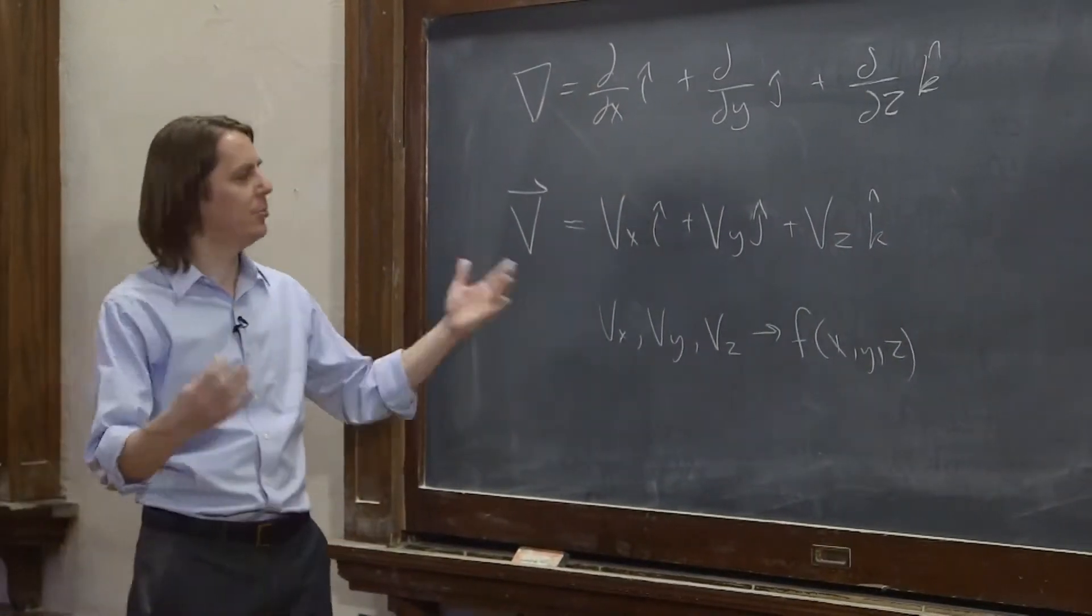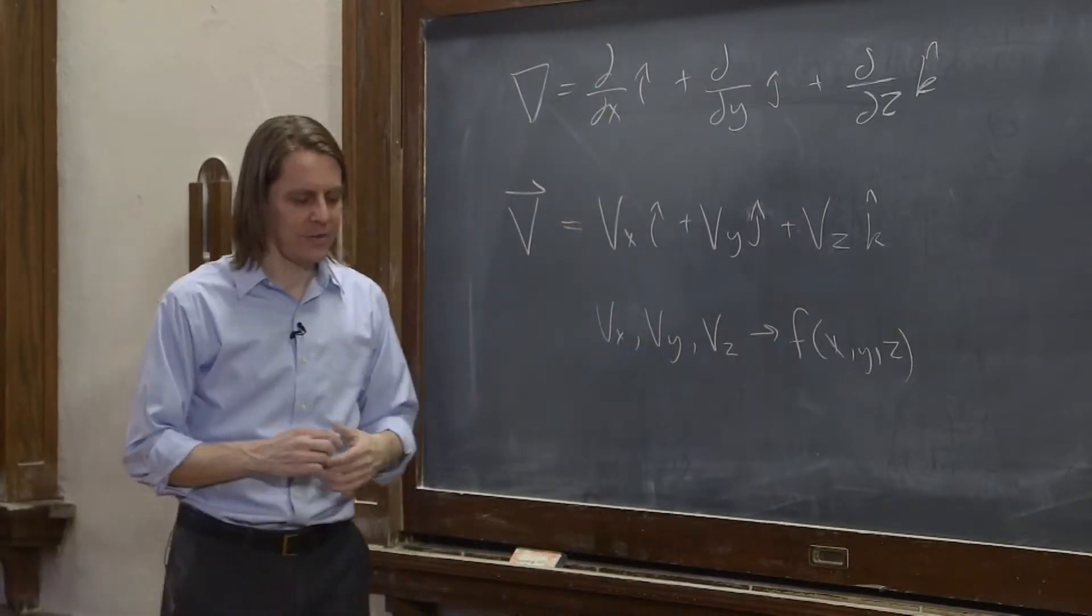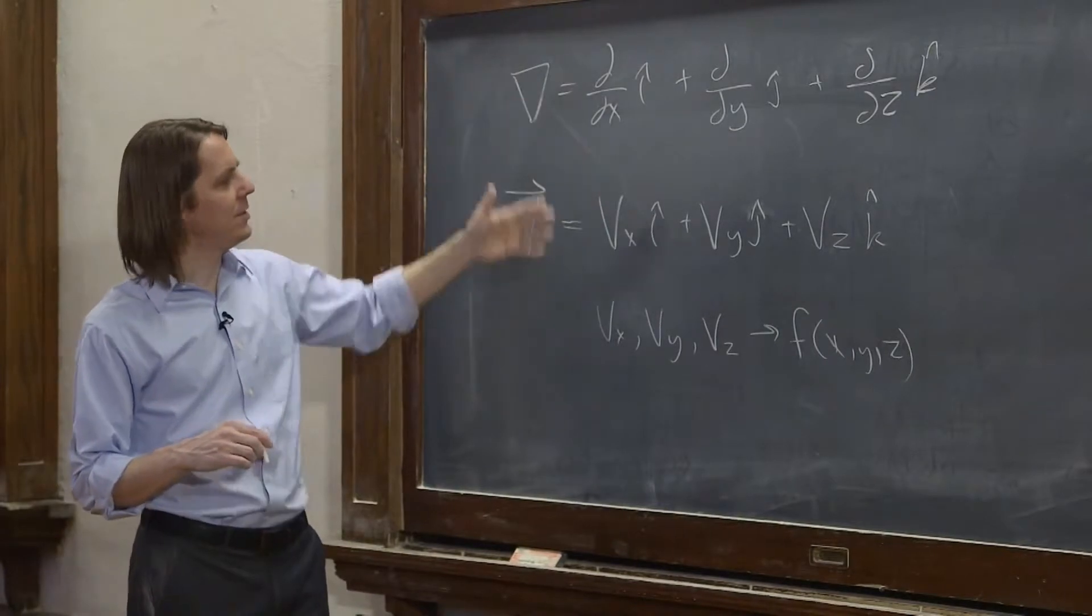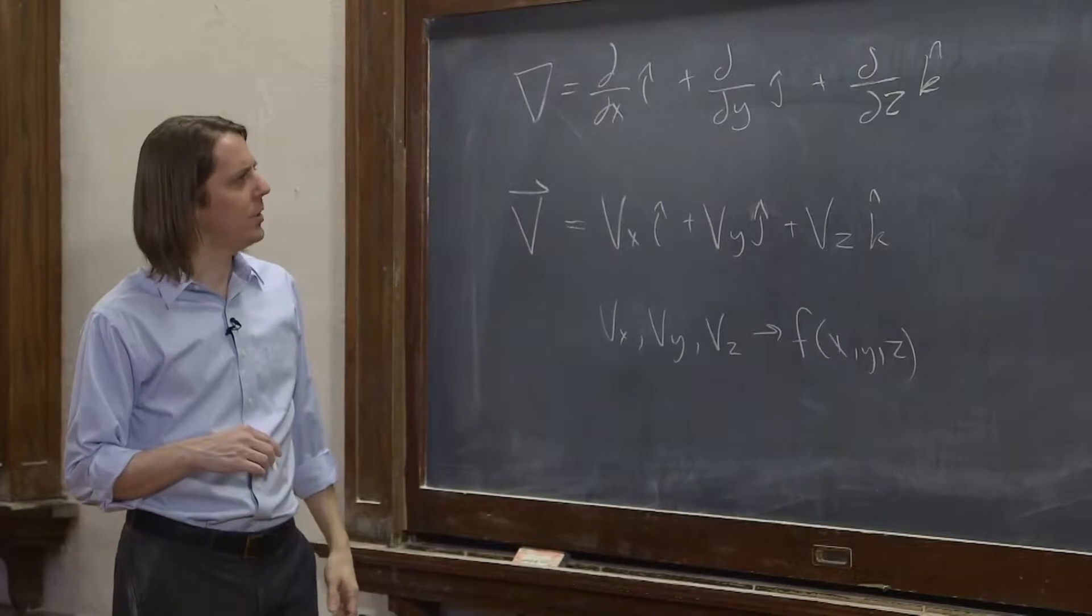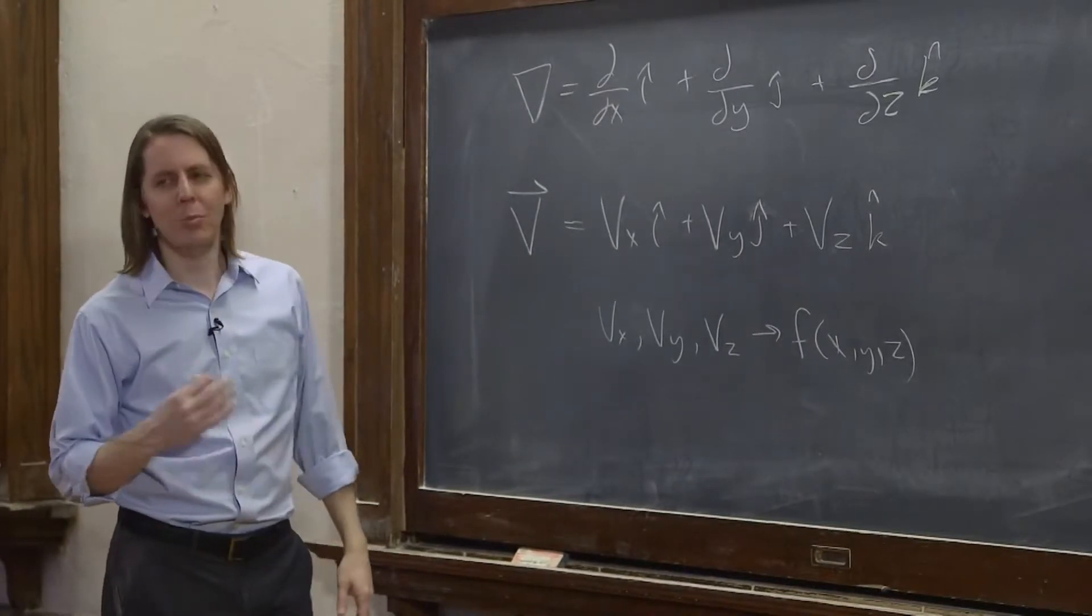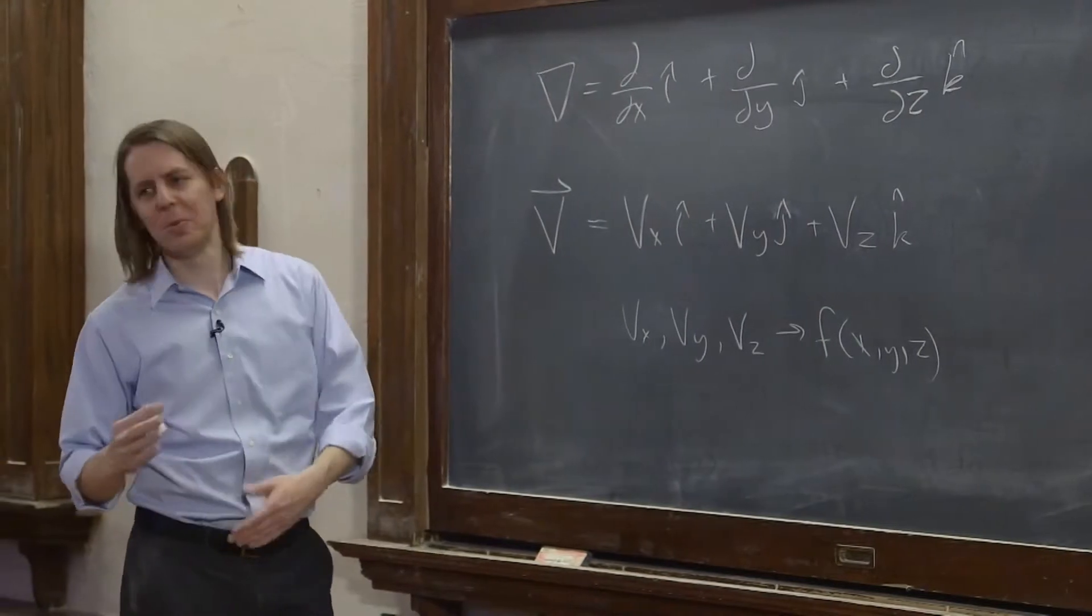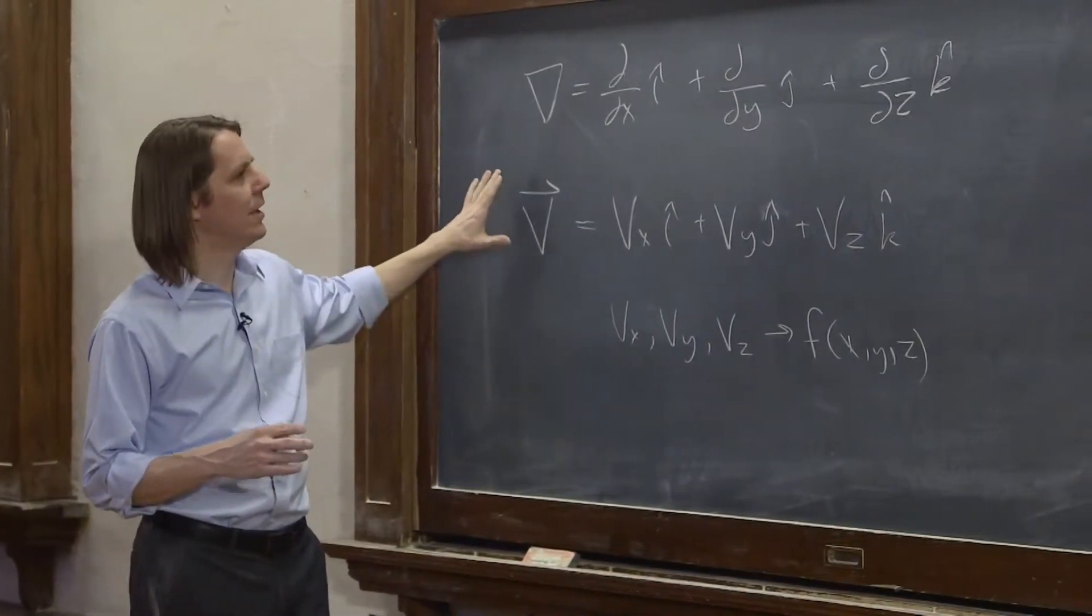They could be constants. They could be anything. The point is, these are really functions here, even though I'm calling them Vx, Vy, Vz. So we want to have our operator operate on a vector field. So how is it going to do that? Well, we said they're not really multiplying. They're really operating on. But they operate on things in a way that looks like multiplication. So if this thing kind of looks like a vector, and this looks like a vector, how are you going to combine them?